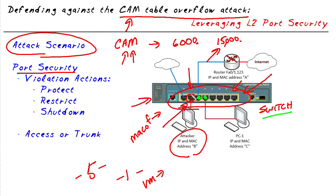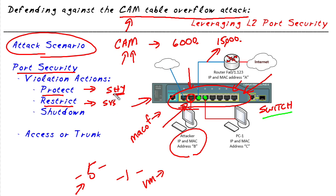Once port security is enabled, we specify what should happen when a violation occurs. 'Protect' quietly enforces the limit — it won't let more than the maximum number of MAC addresses be learned, but it sends no syslog messages or alerts. 'Restrict' works similarly but does generate alerts, syslog messages, and SNMP messages so administrators are notified. The third option, 'shutdown,' is the most severe and is also the default — it puts the port into an error-disabled state, blocking all traffic until the port is manually brought back up.